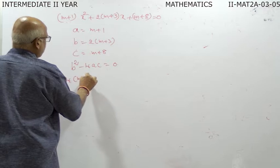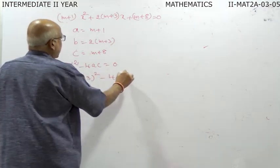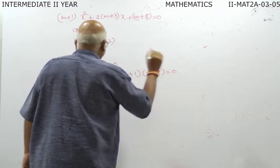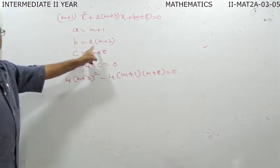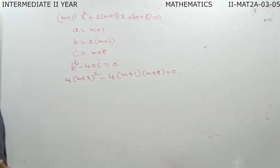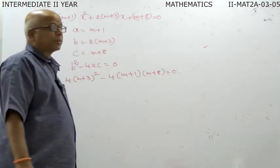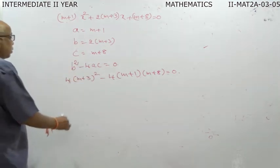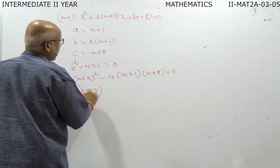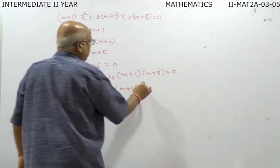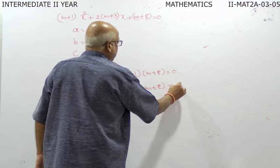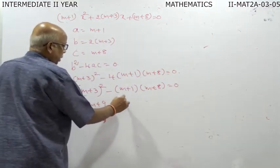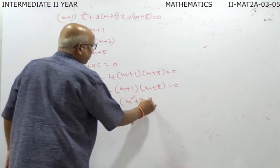Substituting: 4 into m plus 3 whole square minus 4 into m plus 1 into m plus 8 equal to zero. After cancelling the factor of 4, we get m plus 3 whole square minus m plus 1 into m plus 8 equal to zero. Expanding: m-squared plus 6m plus 9 minus m-squared plus 9m plus 8.